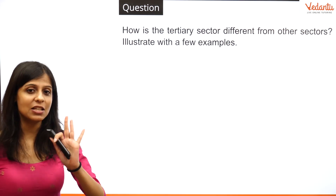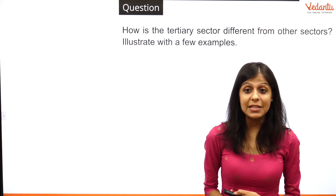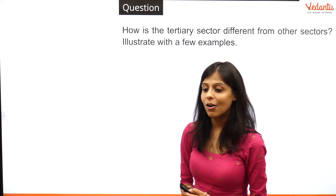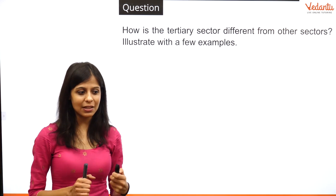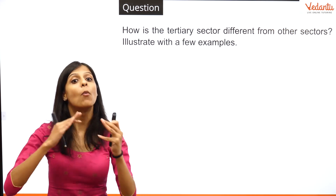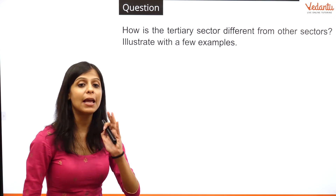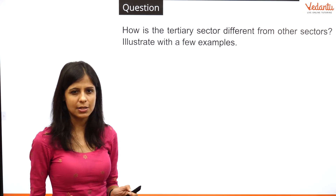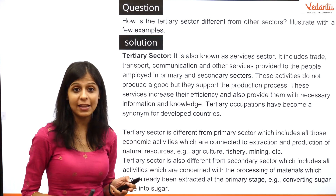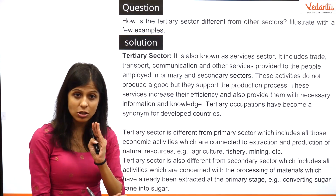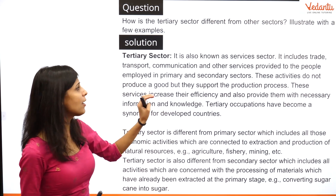The next question is: how is the tertiary sector different from other sectors? Give examples. The tertiary sector is related to intangible activities — you cannot touch or feel the services, but you know you've received them. Examples include communication, transportation, banking, insurance, and healthcare. It is known as the service sector and is related to trade, transportation, and communication where people are employed.